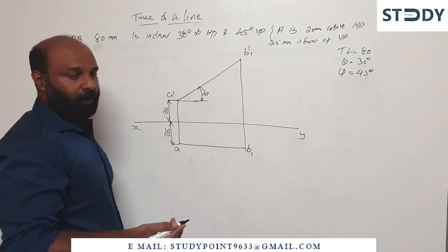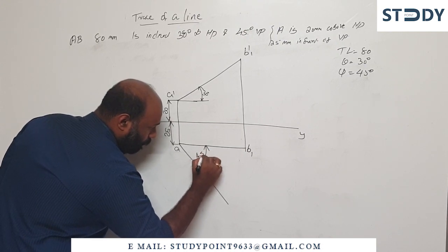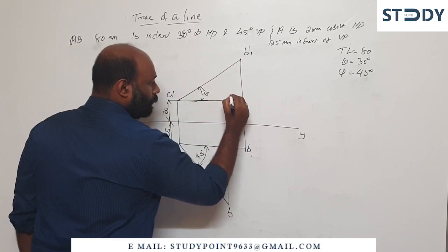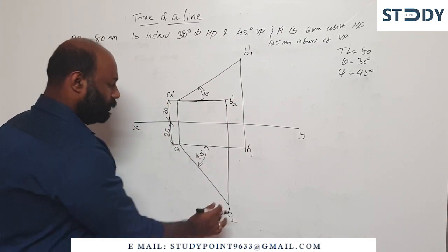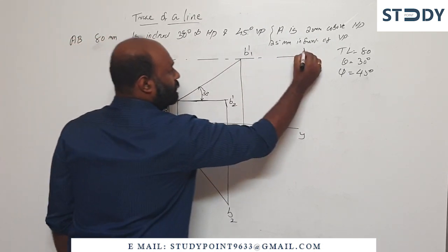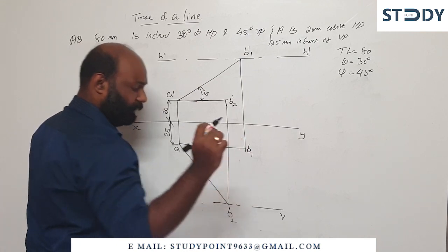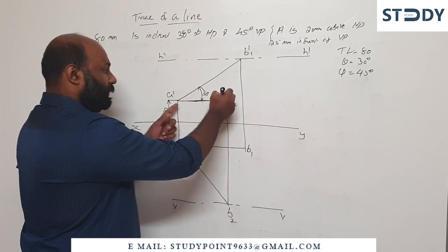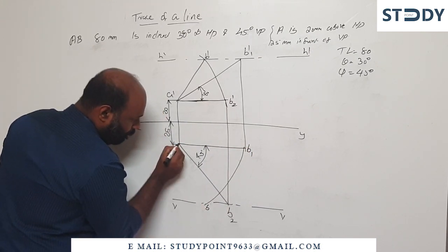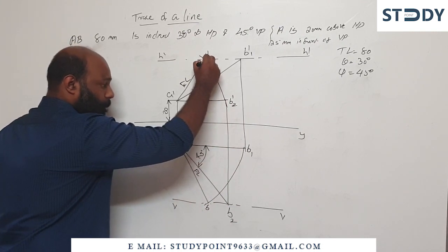Then second assumption: I am going to mark B2 dash and B2 dash. So I am going to run the extreme points — means true length — I am going to run the end points. H dash and H dash, V and V. The front view of the line is H dash, and the top view of the line is V and V close to B.